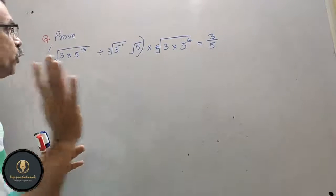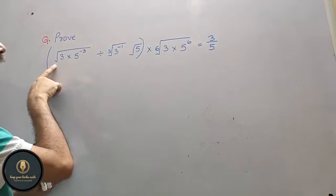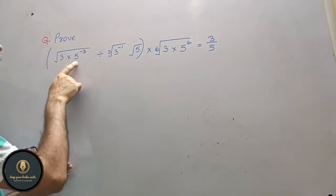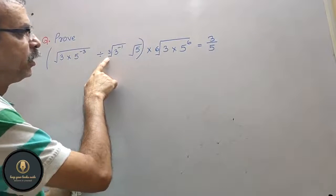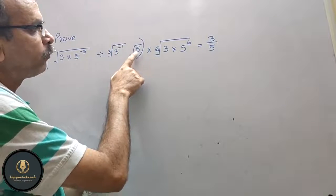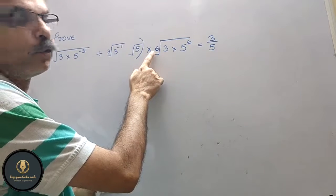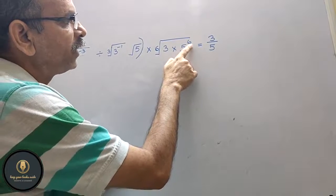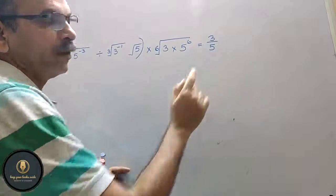Aap ka question hai, prove kya karna hai. Yaha pa diya hua aapka: root 3 into 5 to the power of minus 3, divided by cube root of 3 minus 1, into square root of 2, into 6th root of 3 into 5 to the power 6, that is equal to 3 by 5.